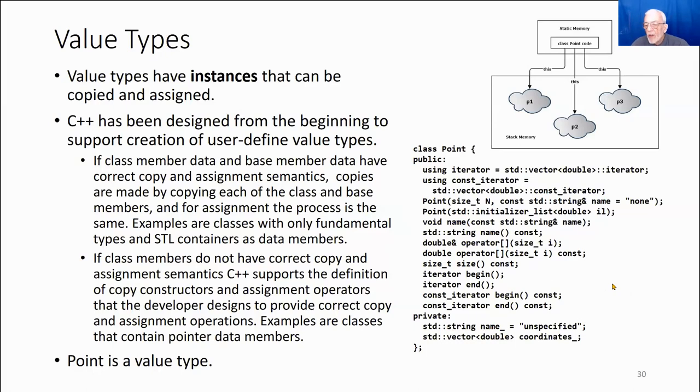If the class had a data member that didn't have correct copy and assignment semantics, for example, a pointer to something on the heap, if we were holding a pointer to some collection of data on the heap, then we would need to create a copy constructor and assignment operator and a destructor for the class to properly manage that pointer.